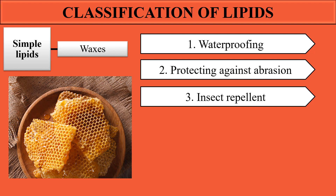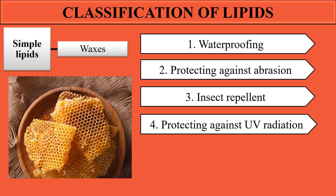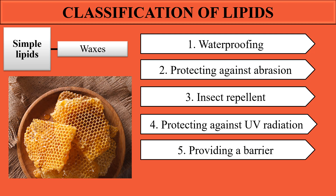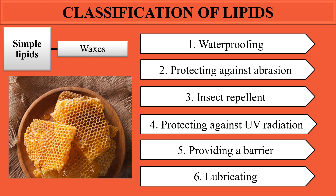Waxes are also used as insect repellents, repelling the attraction of different insects to the surfaces of plants. They protect plants against harmful UV radiation and provide a barrier between leaves and the environment, preventing damage from air and moisture. They also provide lubrication — in humans, waxes reduce friction between the skin and clothing.